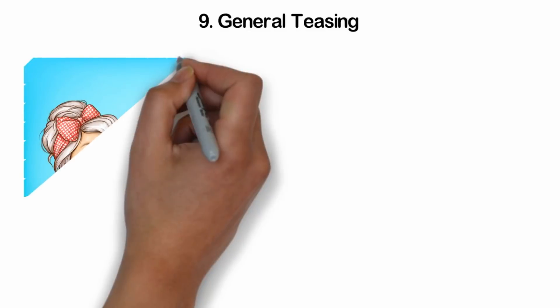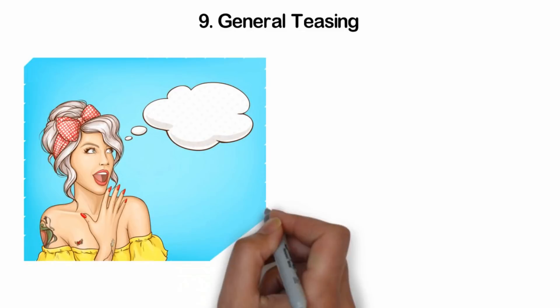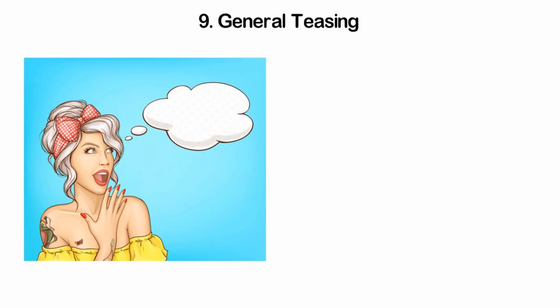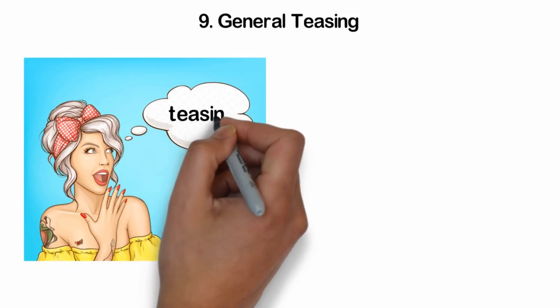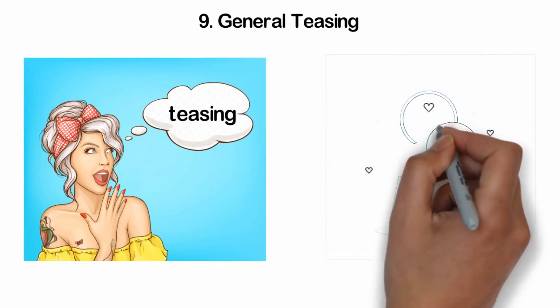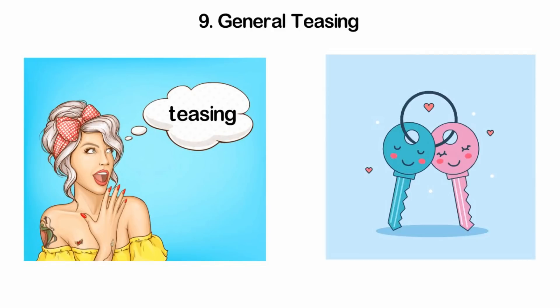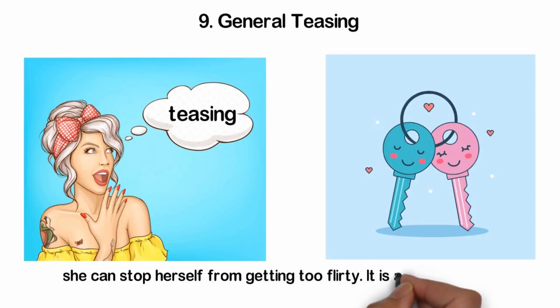Number nine, general teasing. If you are having flirty conversations with each other, then she probably makes it a point to tease you quite a bit as well. If you are in that stage where she likes you but doesn't know if she wants to take the risk, especially because she's married, she is probably revoking some of that tension by teasing you. Banter is fun. Making fun of you is fun, and it ensures your attention is focused on her. Her teasing is a bit relentless, but there's nothing mean there. Teasing could be an excellent way of maintaining a line. This way, she can stop herself from getting too flirty. It is also hard to associate her teasing with something more serious.